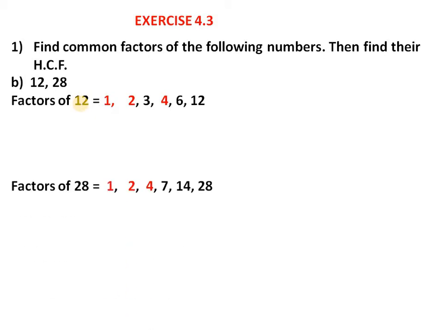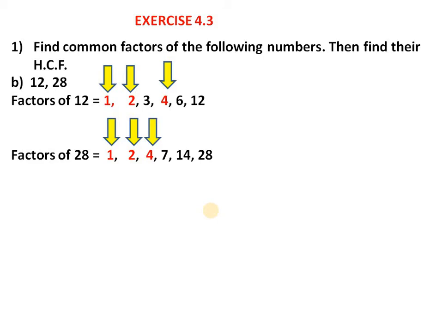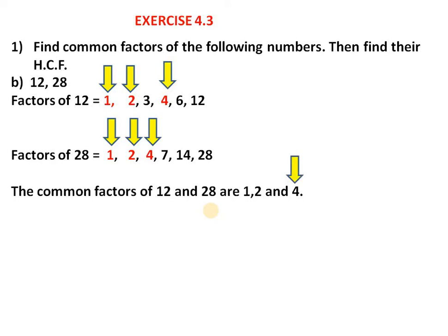Now factors of 28: 1 × 28, 2 × 14, 4 × 7. So factors of 28 are 1, 2, 4, 7, 14, and 28. The common factors are 1, 2, and 4. The highest among these is 4. Therefore, HCF of 12 and 28 is 4.